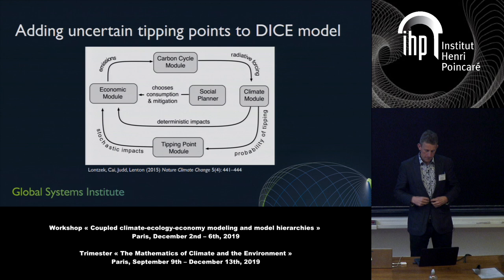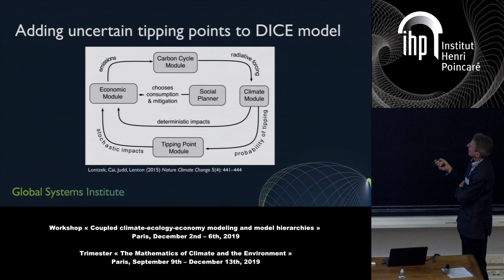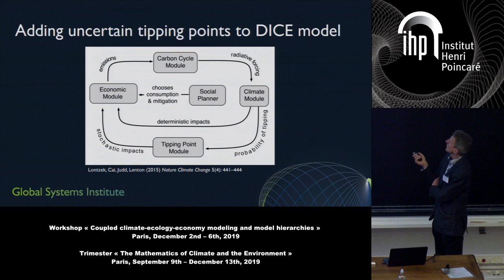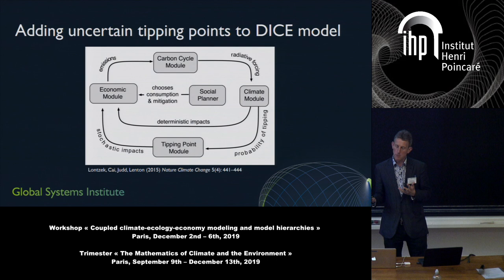That should tell you enough about tipping points to convince you that there's a legitimate risk to think about. So let's go back to cost-benefit analysis and simple integrated assessment model tools. What I got up to with Tom Lontzek, Yongyang Cai and Ken Judd was trying to add the possibility of these climate tipping points into Nordhaus' famous DICE model. The bit we've bolted on is some tipping points which we're going to treat in a stochastic dynamic way, not in the purely deterministic way that the rest of the model operates.